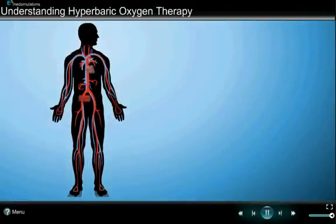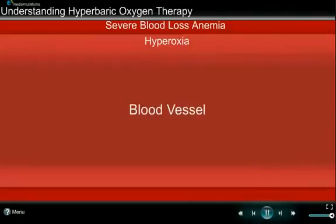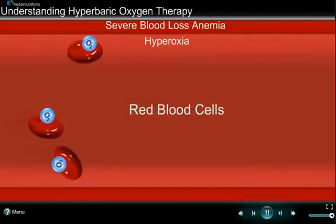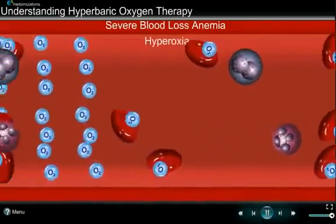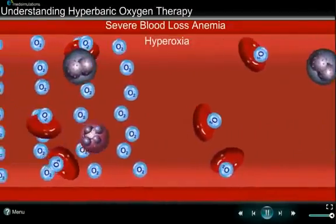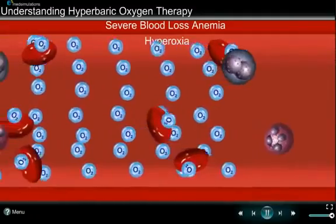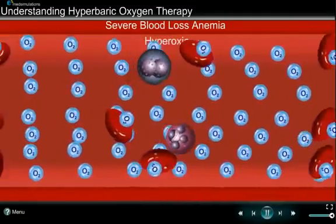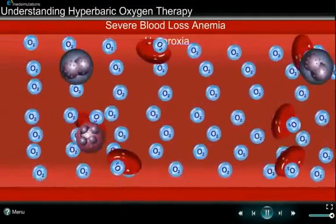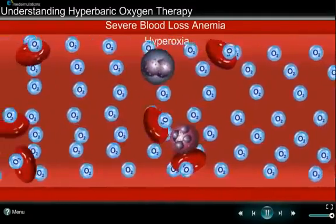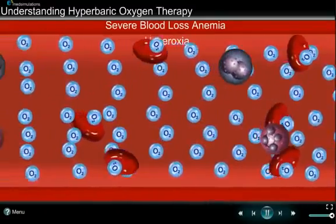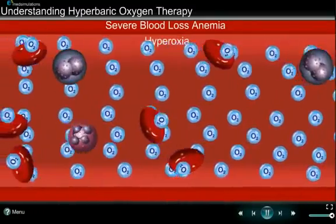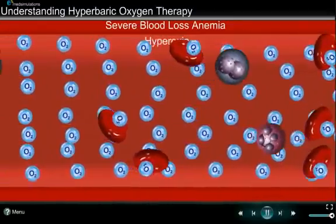Patients with severe blood loss anemia have low oxygen-carrying capacity due to much lower amounts of hemoglobin and red blood cells in the blood. HBOT delivers increased oxygen under pressure, resulting in large amounts of oxygen being dissolved into the blood. This maintains the body's oxygen demand and can sustain life until other medical therapies become effective.